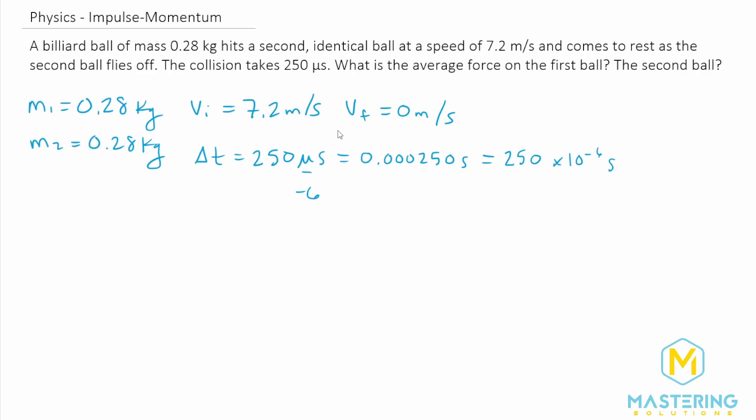So now as we look at the question, we're trying to find what the average force is for the first ball. So let's write the formula for impulse. J for impulse is equal to the change in momentum, which is also equal to the average force times the change in time.